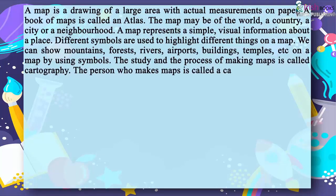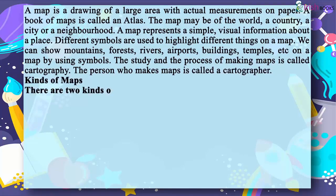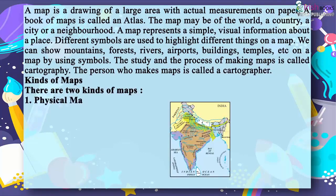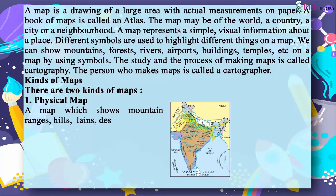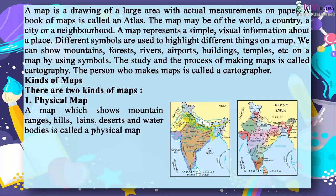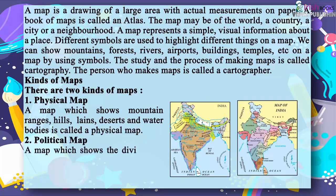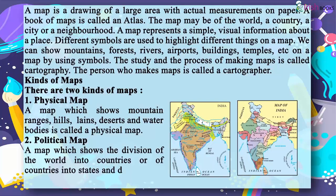The person who makes maps is called a cartographer. There are two kinds of maps. 1. Physical map: A map which shows mountain ranges, hills, plains, deserts, and water bodies is called a physical map. 2. Political map: A map which shows the division of the world into countries, or of countries into states and districts, is called a political map.